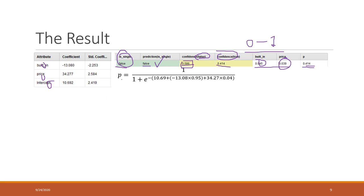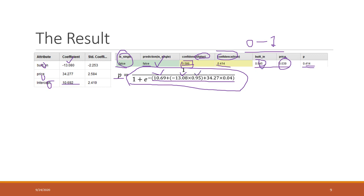The p-value equals the logistic function of the formula: the intercept plus the coefficient for year built times the year built, plus the coefficient beta for price times the price. The price coefficient is 0.039, approximately 0.04. If you calculate that value, you will see that the p-value is 0.414.